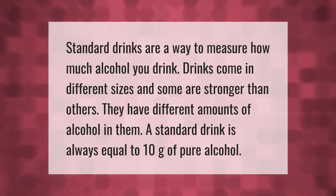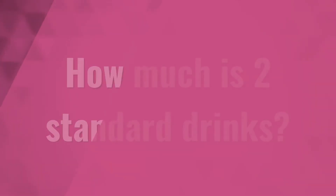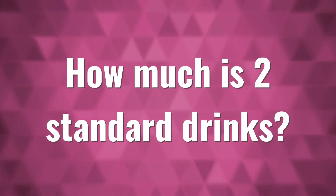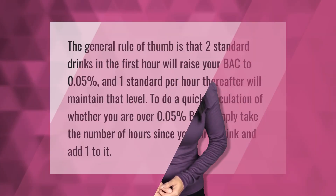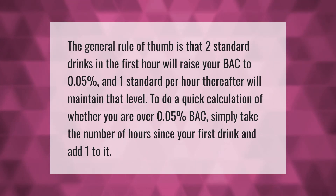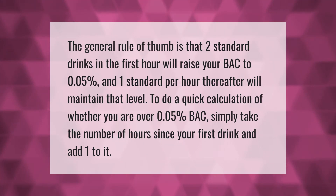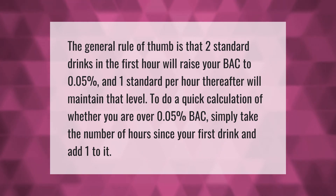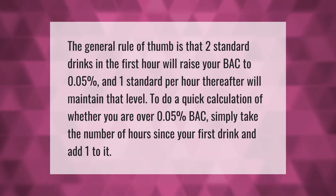The general rule of thumb is that two standard drinks in the first hour will raise your BAC to 0.05, and one standard drink per hour thereafter will maintain that level. To do a quick calculation of whether you are over 0.05 BAC, simply take the number of hours since your first drink and add one to it.